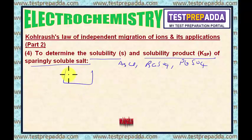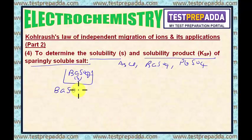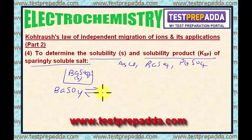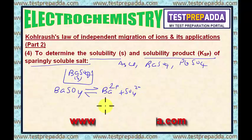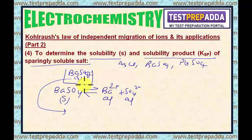For example, if I take BaSO₄ — since it is sparingly soluble, its solubility will be very, very less. The concentration of Ba²⁺ and SO₄²⁻ ions in the solution will be extremely small. Since the concentrations are extremely small, at any point of time the molar conductance can be considered as molar conductance at infinite dilution.